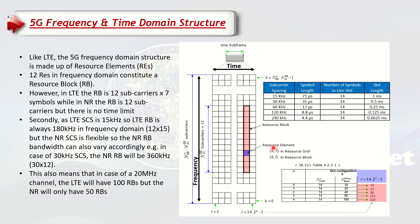The next important concept is bandwidth. In LTE using 15 kHz with 12 subcarriers per resource block, one resource block's bandwidth is 12 × 15 kHz = 180 kHz. In 5G, for capacity expansion we often use 30 kHz, so the resource block bandwidth becomes 12 × 30 kHz = 360 kHz. This means we use more bandwidth for the same resource block in 5G when using mu equal to 1.